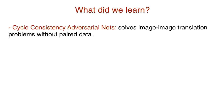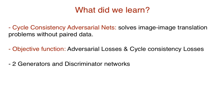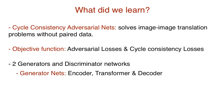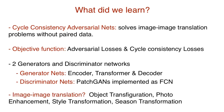So, what did we learn? Cycle-consistent adversarial nets are a type of GAN that can solve image-to-image translation problems without a paired dataset. The loss is divided into two parts: adversarial losses and cycle-consistency losses. The architecture consists of two generator networks and two discriminator networks. The generator network consists of an encoder (three conv layers), a transformer (six residual blocks), and a decoder (two deconv layers followed by a conv layer). The discriminator networks are patch GANs implemented as fully convolutional networks. Cycle GANs can solve object transfiguration, photo enhancement, style transformation, and seasonal transformation.